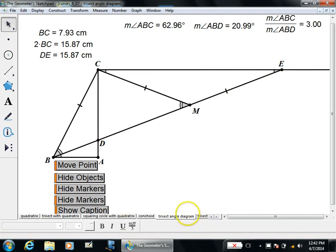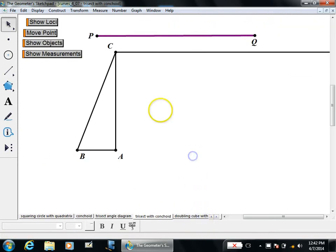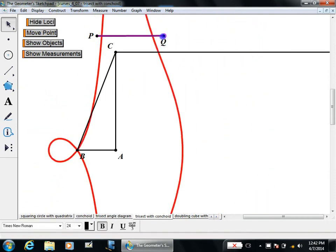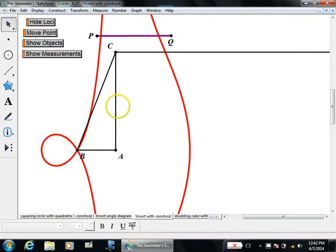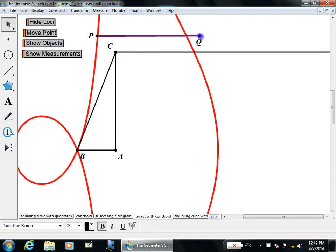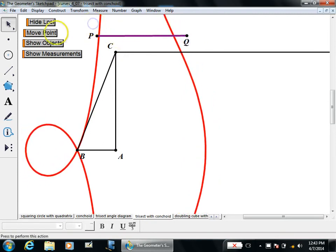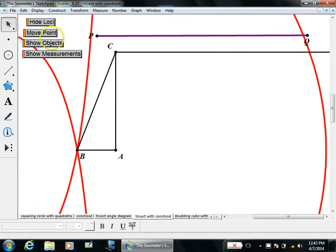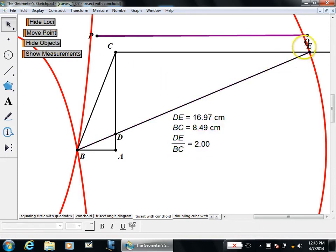Well, that ends up being impossible with a compass and a straight edge. However, if I have a tool for drawing a conchoid of Nicomedes, and the pole is the vertex here, and directrix is the side opposite the angle, and this PQ is going to be the distance. If I have a tool that makes this, and I make that distance two times BC, then where the conchoid intersects this horizontal line will be what I need.